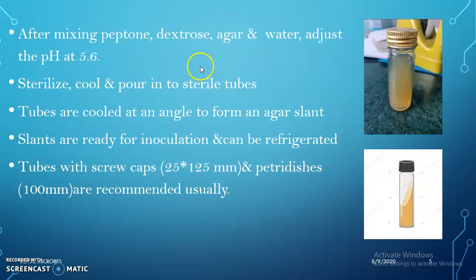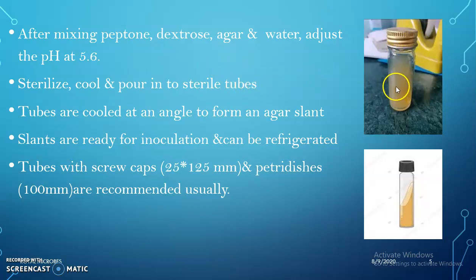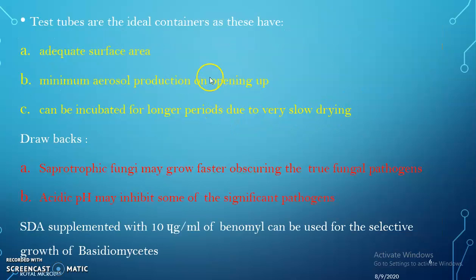After mixing all the ingredients, the pH must be adjusted to 5.6 and it is sterilized, cooled, and poured into appropriate containers. The containers mainly used are screw-capped bottles or petri plates. These bottles are cooled at an angle to form an agar slant. Test tubes are more ideal containers because adequate surface area is provided, with minimum aerosol production and opening.